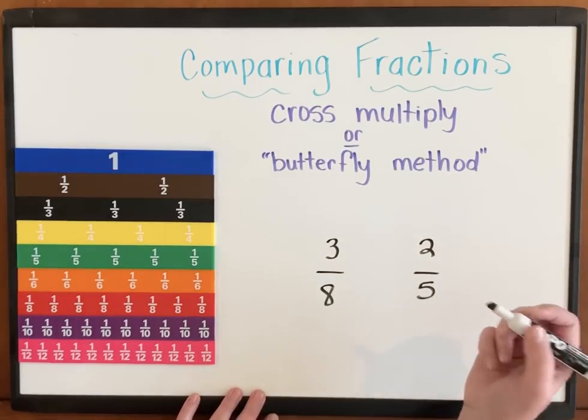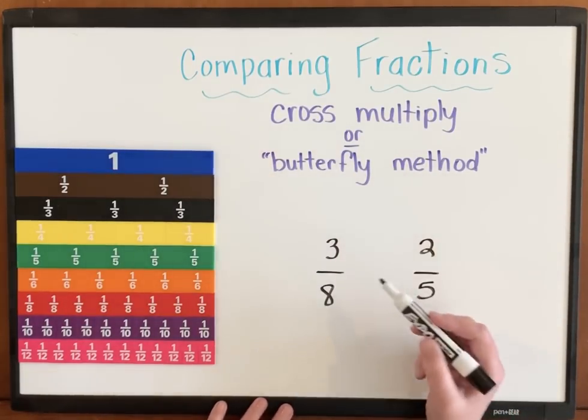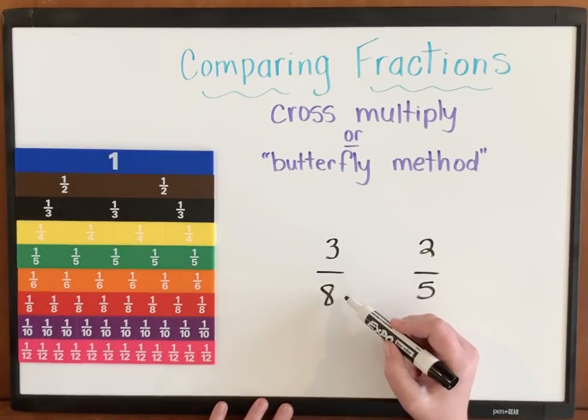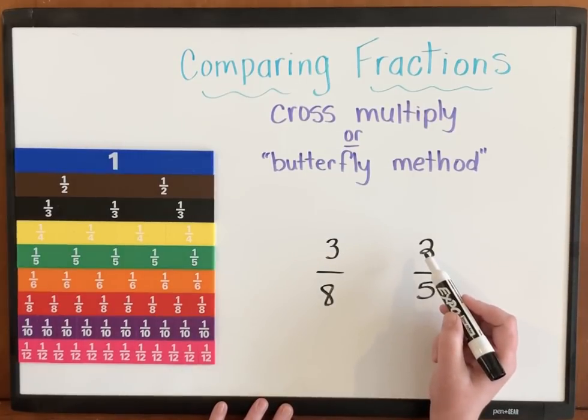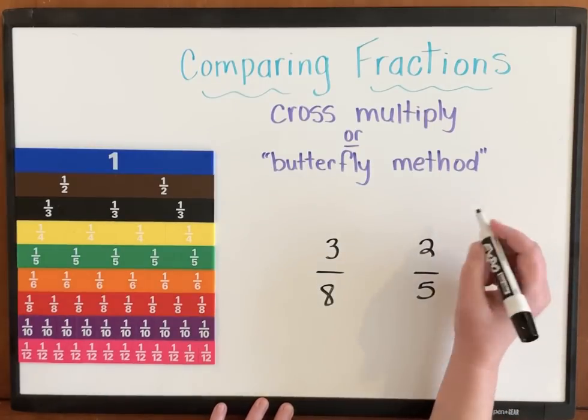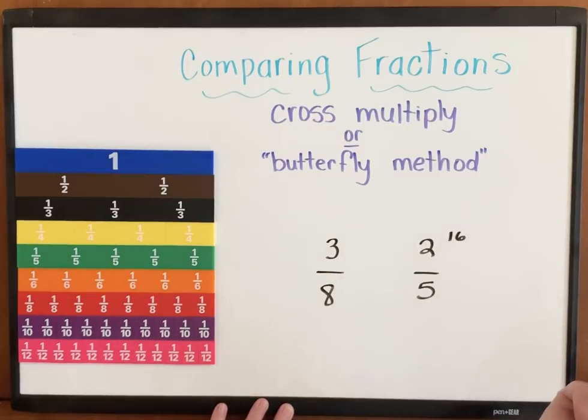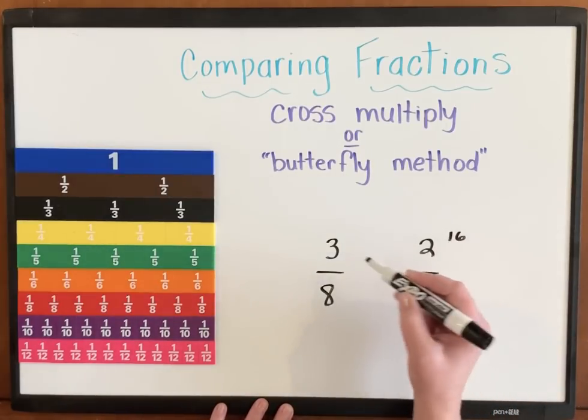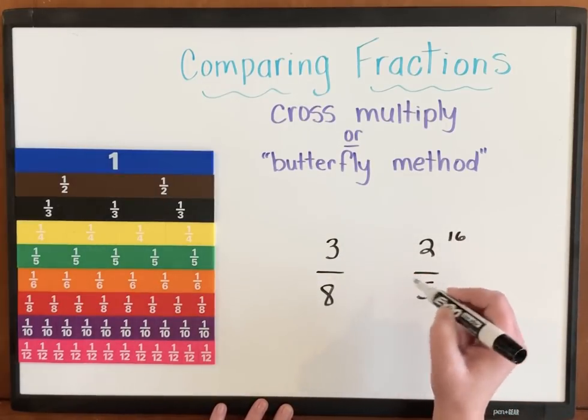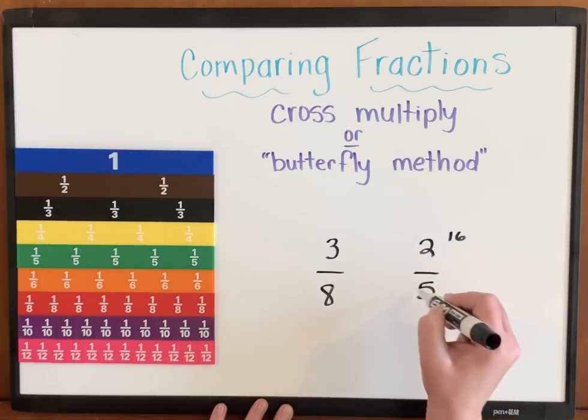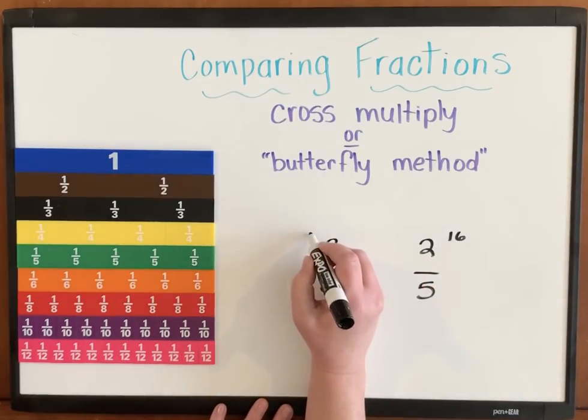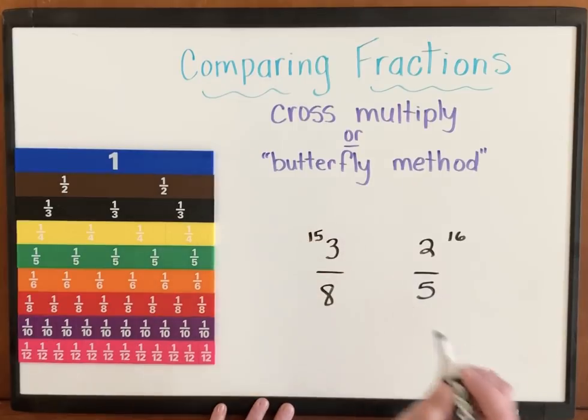Let's cross multiply. To cross multiply, I'm going to multiply my bottom denominator by my top numerator. 8 times 2. Well, I know 8 times 2 gets me 16. I like to put a tiny 16 up in that corner. 5 times 3, denominator times numerator. 5 times 3 is 15. I like to put that in the top corner. Very small. Small as I can.